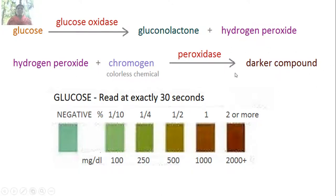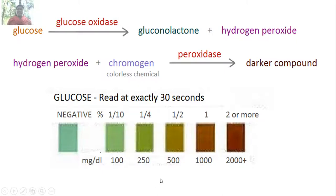The concentration of this dark-colored compound indicates the amount of glucose present. After 30 seconds, if the paper strip shows a slight bluish color, the result is negative. A light green color indicates 100 mg/dL, a darker green indicates 250 mg/dL, an algae-like greenish color indicates 500 mg/dL, light reddish indicates 1000 mg/dL, and dark reddish indicates 2000 mg/dL. This is how results are inferred when testing biological samples with glucose oxidase.